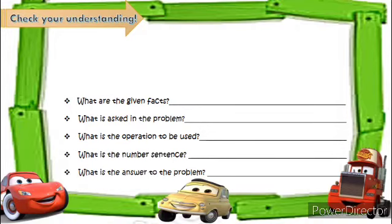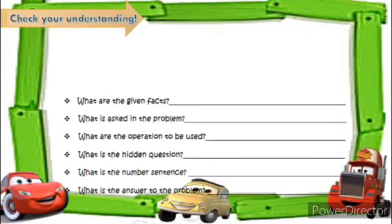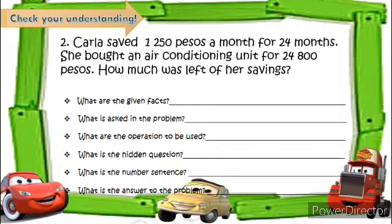Let's check your understanding. At the back of your worksheet, solve and write your solution. Number 1: In a poultry farm, there are 2,575 chickens. Each chicken lays an average of 75 eggs in a year. How many eggs can be harvested in the farm in a year? Follow the guided questions. Number 2: Carla saved 1,250 pesos a month for 24 months. She bought an air conditioning unit for 24,800 pesos. How much was left of her savings? Follow again the guided questions. Are you ready? Let's begin!